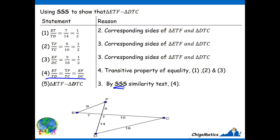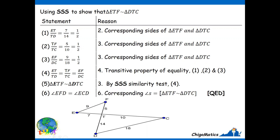If that is the case, we can conclude that the two angles we wanted to show are equal — they are, because they are contained in triangles that are similar. Those are the corresponding angles in those triangles, which are equal. With this, we have proved our case.